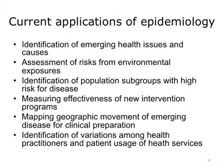In looking at mapping geographic movement of emergent disease and clinical preparation, we can see that this is both an increasingly popular modern application of epidemiology, while also being the original historic application of epidemiology. For example, when the swine flu became an epidemic in 2009, many different websites began to track and map new incidents of swine flu. This has applications for public health in many different ways, because it provides emergency information to the public, while also helping public health agencies to prepare for potential epidemics. An epidemiological application also includes the identification of variations among health practitioners and health services provided to local communities, and patient usage of these health services. This information allows us to study potential differences in health outcomes based on variations in geographical locations where practices differ or where health resources are absent.